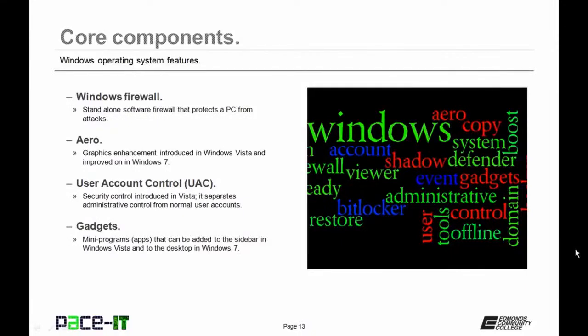User Account Control is a security control introduced in Windows Vista that separates administrative control from normal user accounts — sometimes it's a bit of a nanny, but get used to it. Then there are Gadgets — mini programs, think apps, that can be added to the sidebar in Windows Vista and to the desktop in Windows 7.